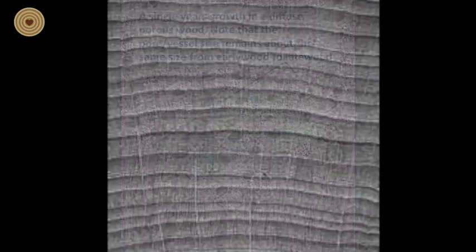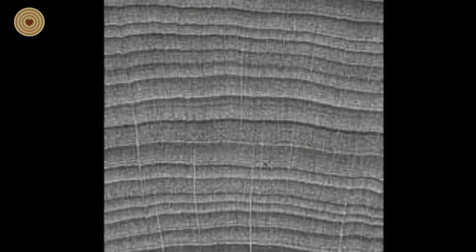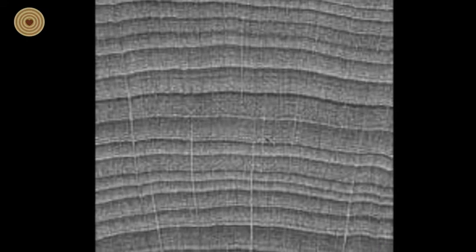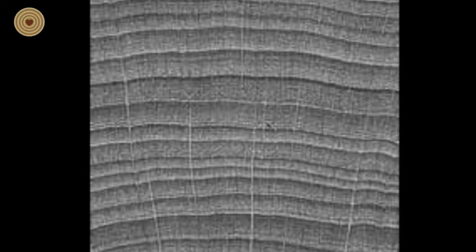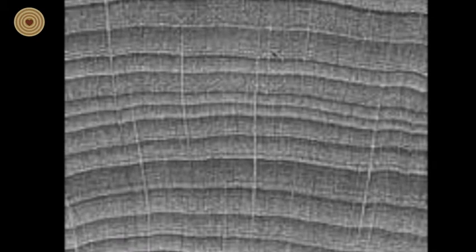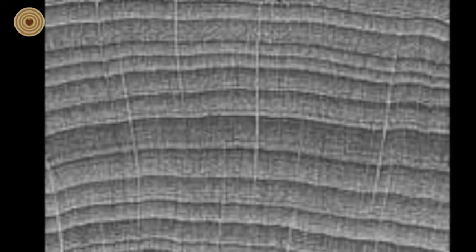There are also elongated cells in hardwoods that look similar to the tracheids in softwoods. This type of cell is generally known as a fiber. Fibers come in different forms, and their primary role is in the structural support of the tree. Fibers have less function in sap transport, and as noted earlier, that role is carried out primarily by the vessels in hardwoods.